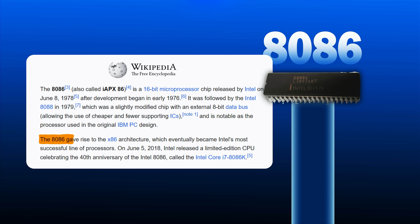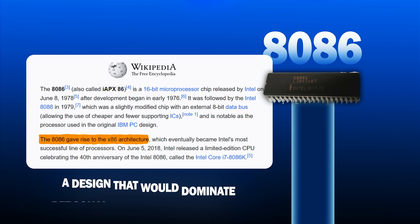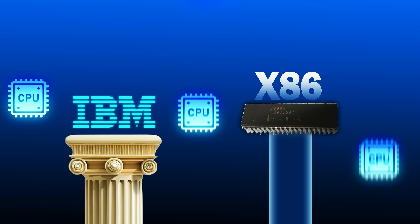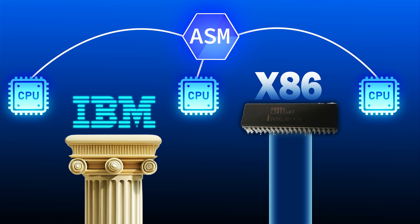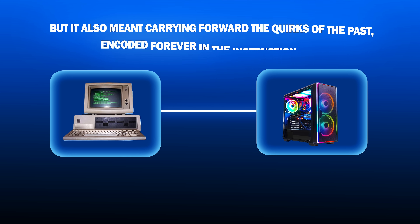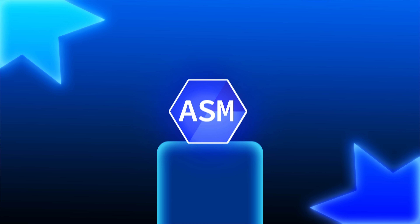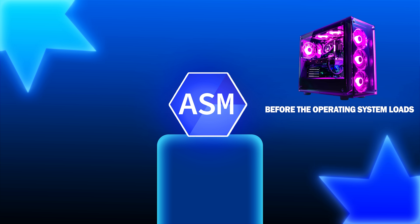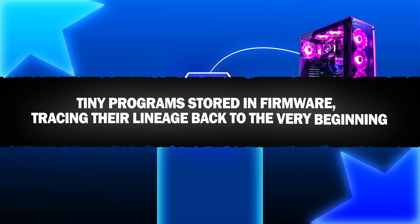In 1978, Intel released the 8086, introducing the x86 instruction set — a design that would dominate personal computing for decades. With IBM's adoption of the architecture in the early 1980s, x86 became a standard. Every new processor had to preserve compatibility with the old assembly instructions. This was both a blessing and a curse: software written years earlier could still run, but it also meant carrying forward the quirks of the past, encoded forever in the instruction set. Yet through it all, assembly remained the foundation. When a PC boots today, before the operating system loads, the first instructions executed are still written in assembly — tiny programs stored in firmware, tracing their lineage back to the very beginning.